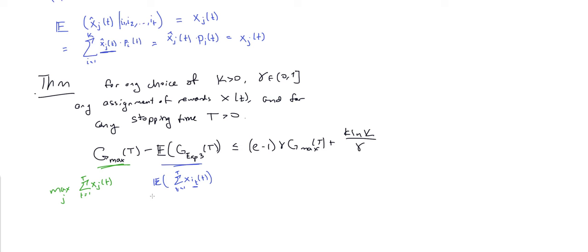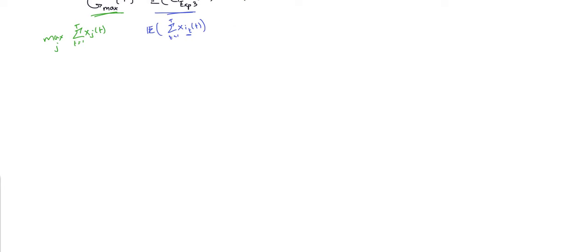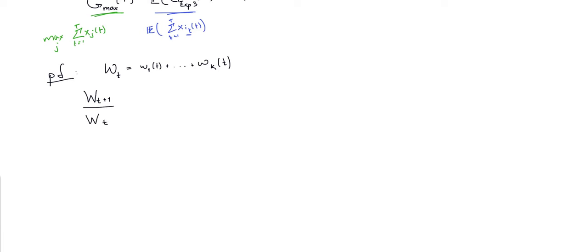What we're interested in is finding bounds on the ratio of weights from one round to the next: W(t+1) / W(t). This is the sum of weights in round t+1 divided by the sum of weights in round t. Right away we can see this equals the sum i from 1 to k of w_i(t+1) divided by W(t). Re-expanding the sum and using the weight update rule, this becomes the sum i from 1 to k of [w_i(t) / W(t)] * exp(gamma/k * x_i_hat(t)).